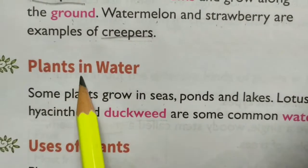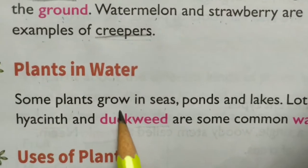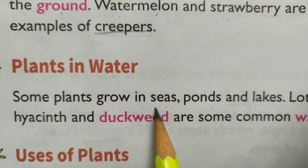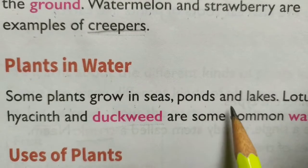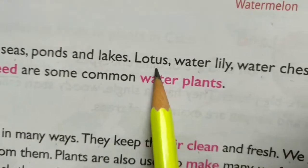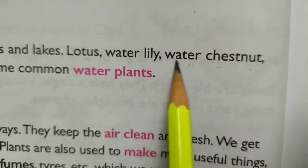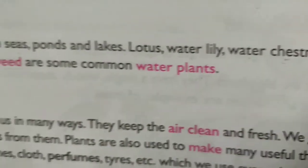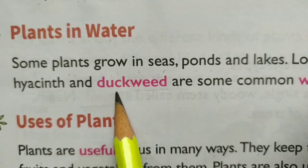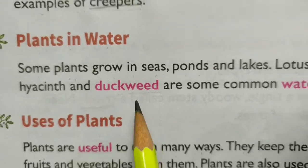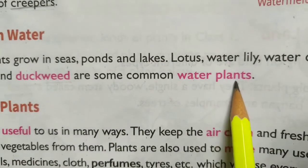Plants in water. Some plants grow in seas, ponds and lakes. Lotus, water lily, water chestnut, hyacinth and duckweed are some common water plants.